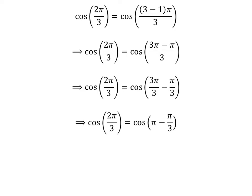Cancelling out the common factor in the numerator and denominator gives us cosine of 2 times pi upon 3 is equal to cosine of pi minus pi upon 3.